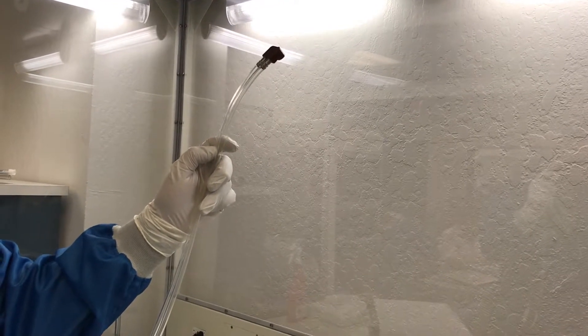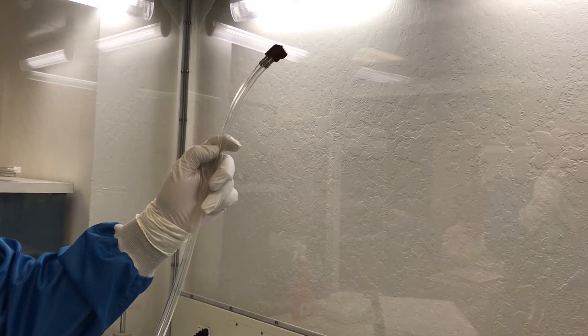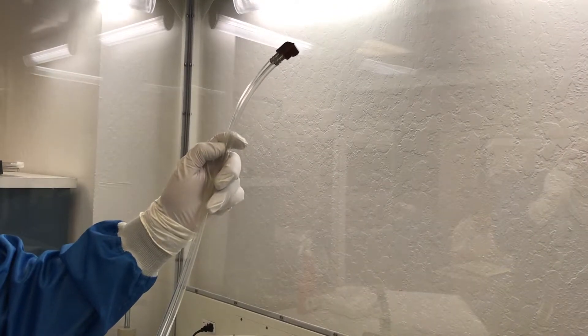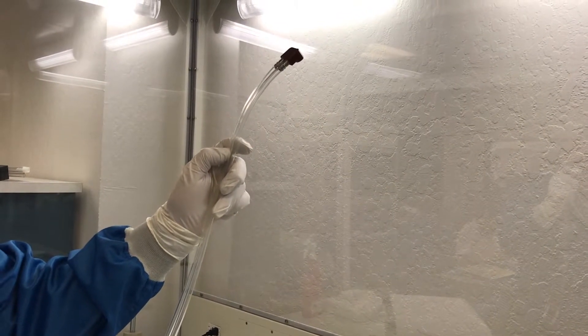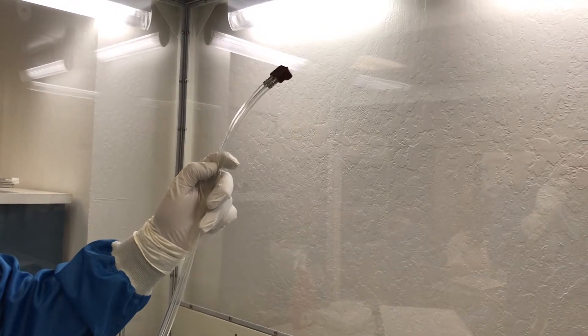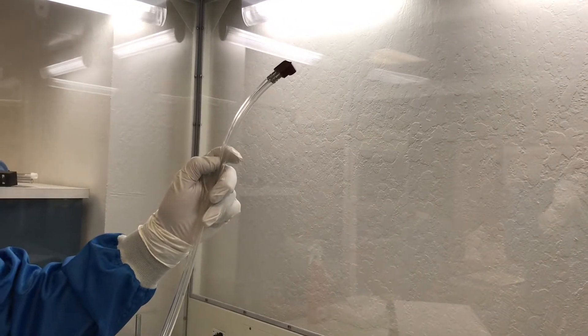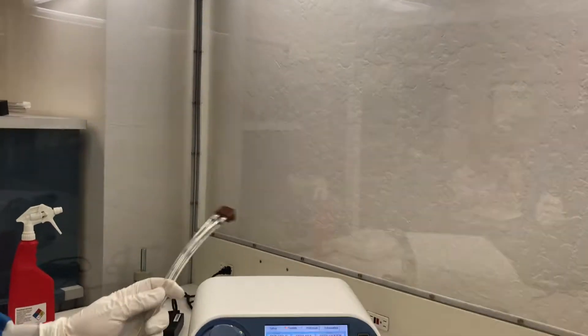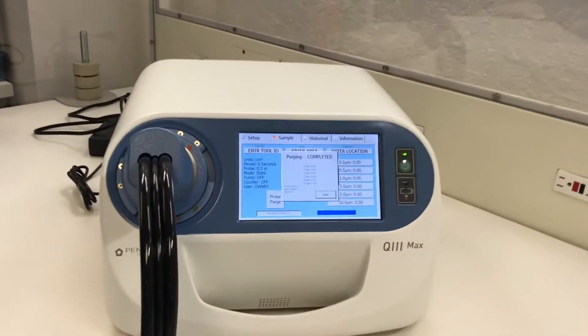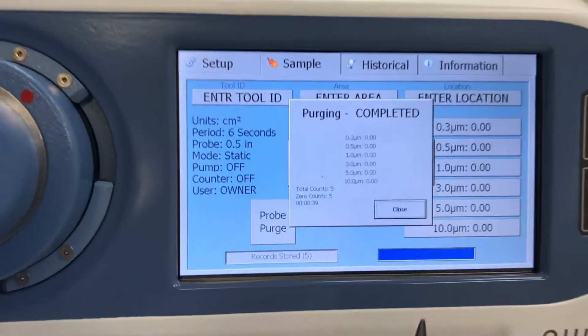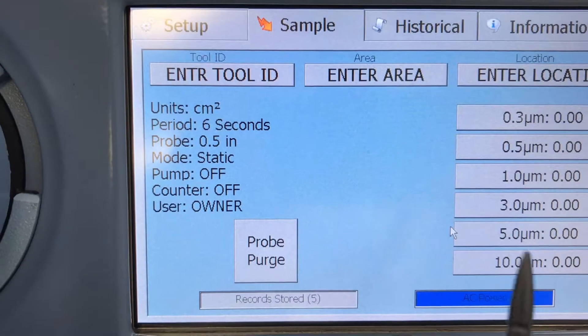The purge process should take 40 seconds to a minute if the environment is clean such as ISO class 5 or better. Notice how the screen shows purging complete. This means that the system is ready to begin testing.